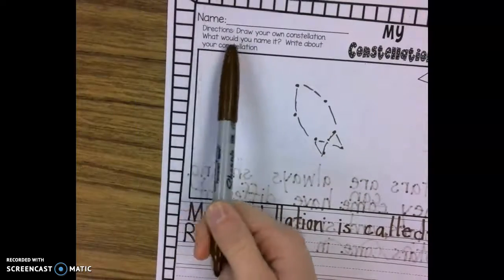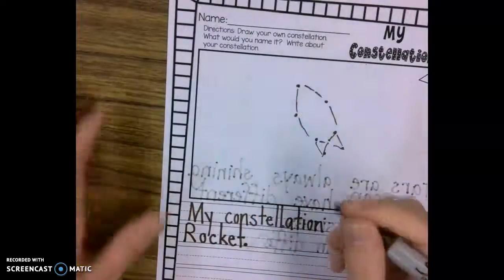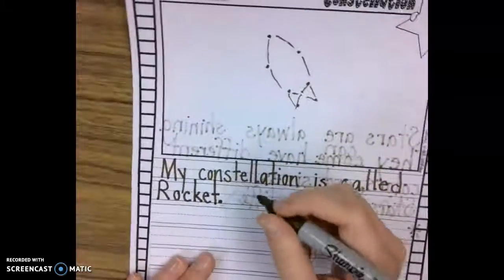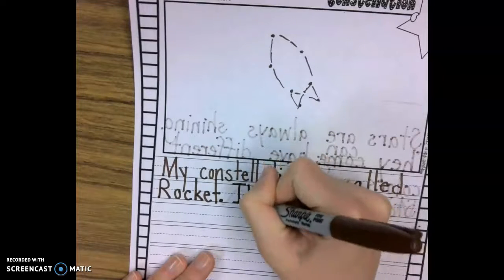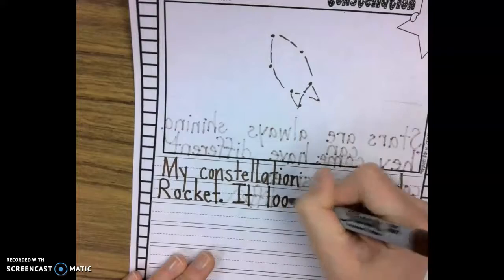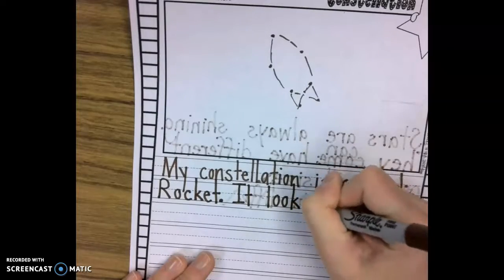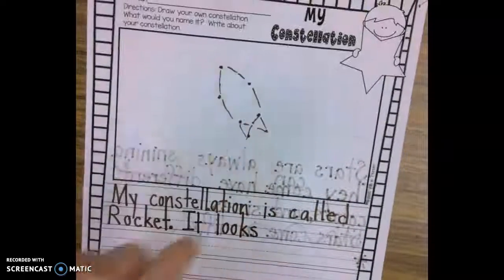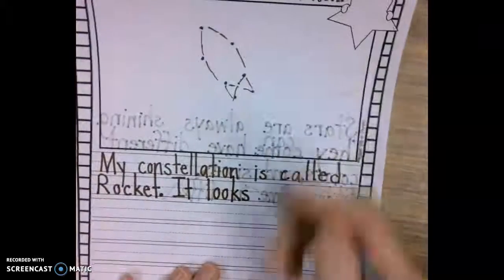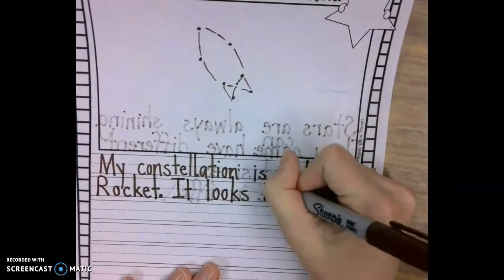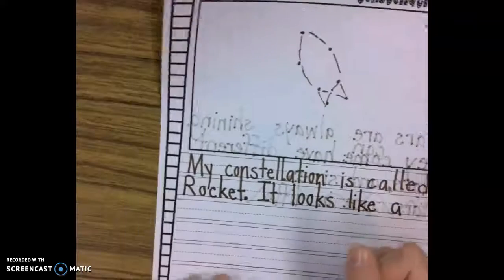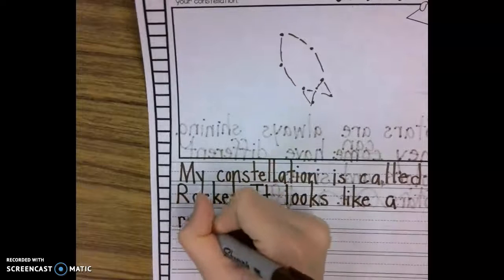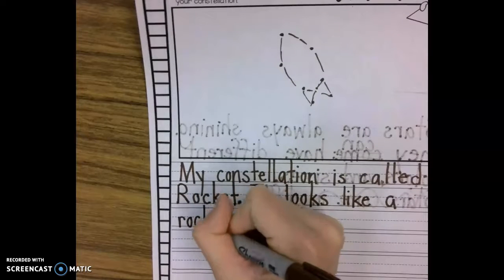So, it says, what would you name it? Write about your constellation. So, I would say, it looks, what does that look like? A rocket. Maybe even a fish, right? Like a rocket. So, tell me what it looks like.